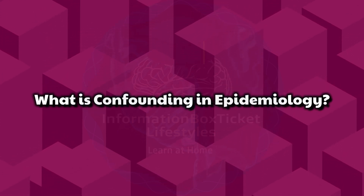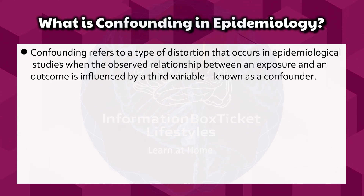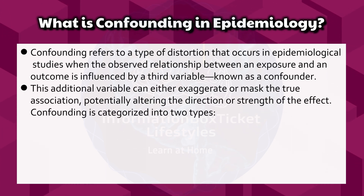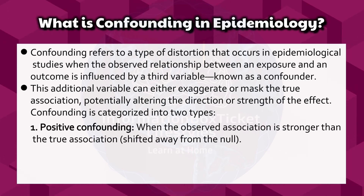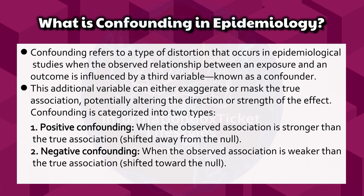Confounding refers to a type of distortion that occurs in epidemiological studies when the observed relationship between an exposure and an outcome is influenced by a third variable, known as a confounder. This additional variable can either exaggerate or mask the true association, potentially altering the direction or strength of the effect. Confounding is categorized into two types: positive confounding, when the observed association is stronger than the true association (shifted away from the null), and negative confounding, when the observed association is weaker than the true association (shifted toward the null).